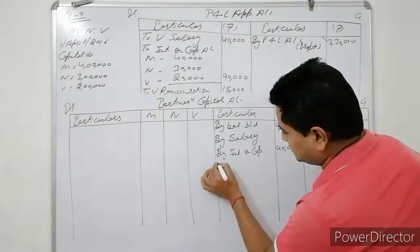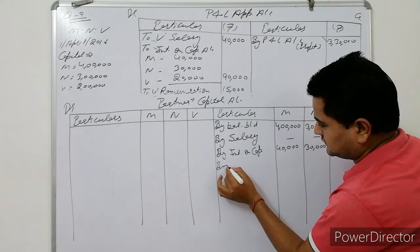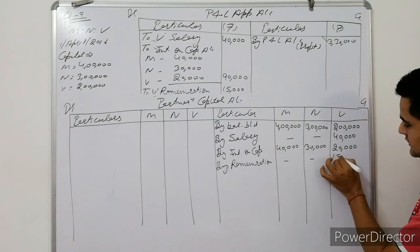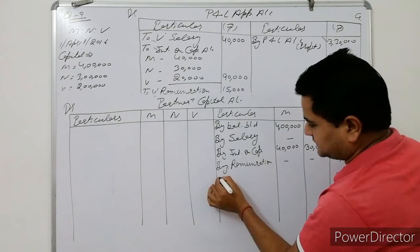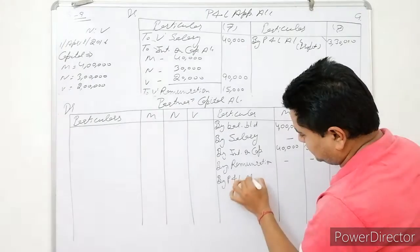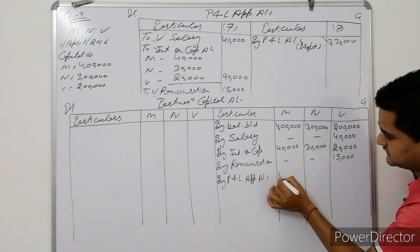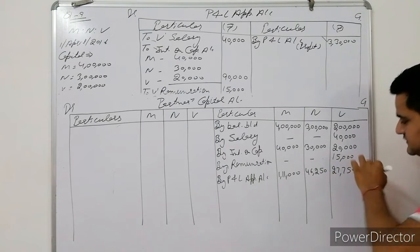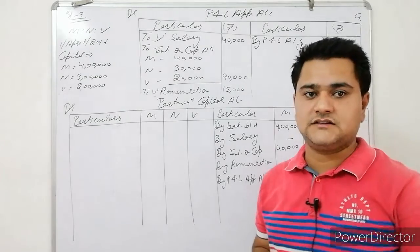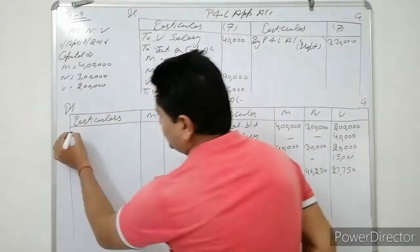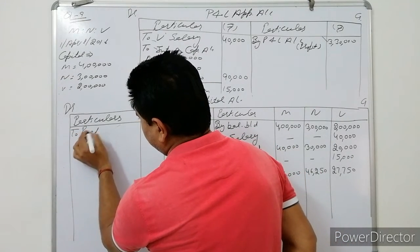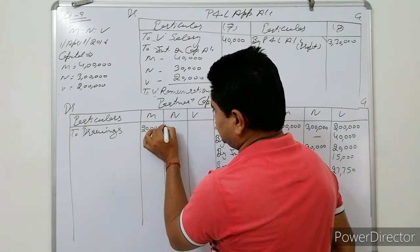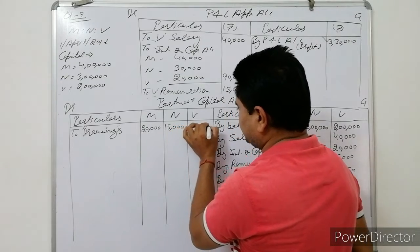Remuneration: Weibo gets Rs.15,000. Profit shares from appropriation account: Manish Rs.1,11,000; Navan Rs.46,250; Weibo Rs.27,750. Then drawings are entered on the debit side: Manish Rs.20,000; Navan Rs.15,000; Weibo Rs.10,000.